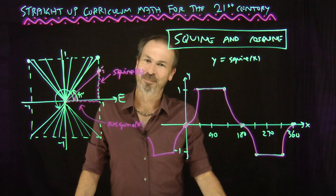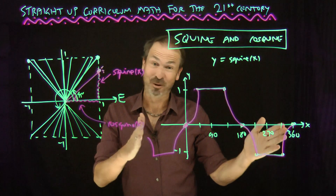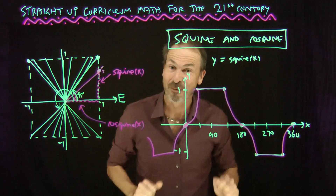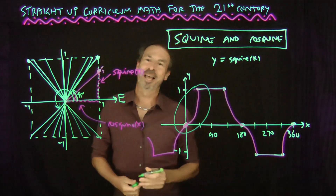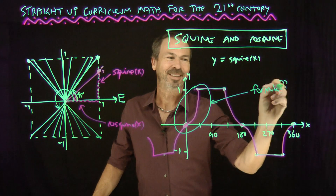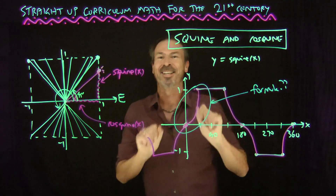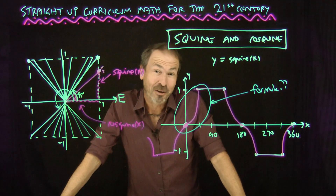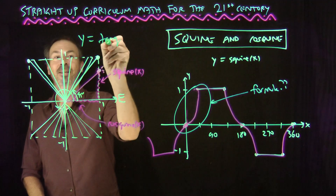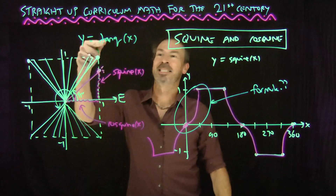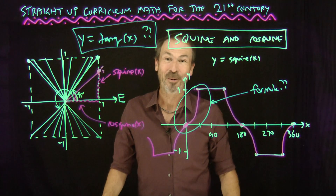Welcome to the graph of y equals squine of x! Here are a couple of challenges. What's the graph of cosquine of x? It's probably the same graph, just shifted by 90 degrees like we had before for sine and cosine. Another question: I bet you could actually get a formula for that curve — for that sectional piece of the picture. It might take some thinking, maybe a walk, but I bet you can work it out. And best of all, if you want a real challenge: what is the graph of y equals tank of x — that is, squine over cosquine, the tangent version? What does the tank graph look like?